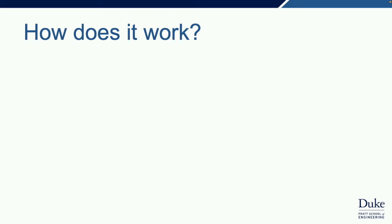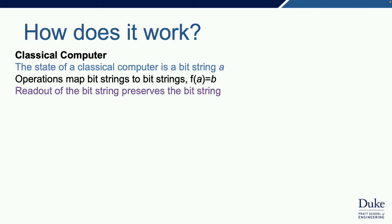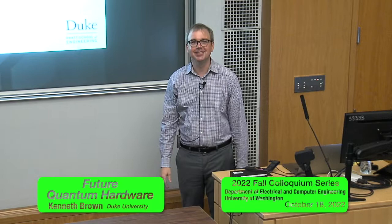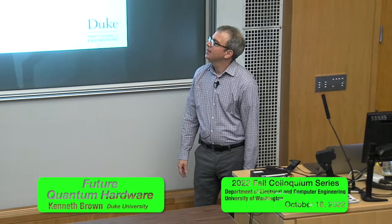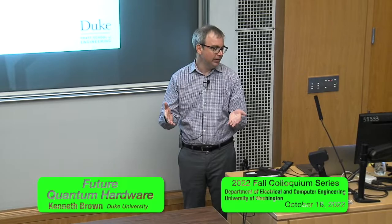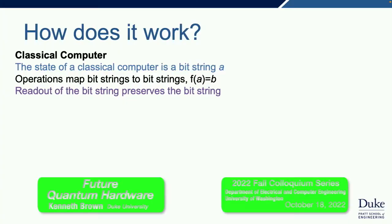How does it work? I like to start with the world's simplest model of a computer. The state of a computer is just a string—a bit string. Any operation on your computer, whether you're watching YouTube or recording this lecture, is just a map from bit strings to bit strings. We read out the bit string; the bit string remains unchanged. That's how we do work normally.